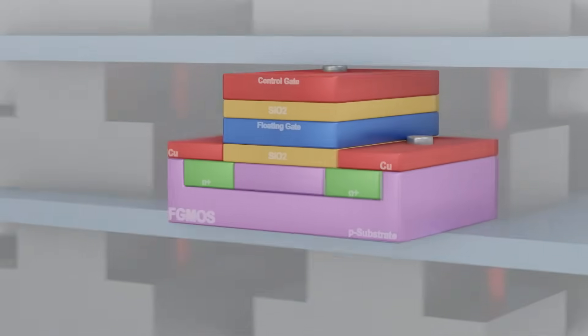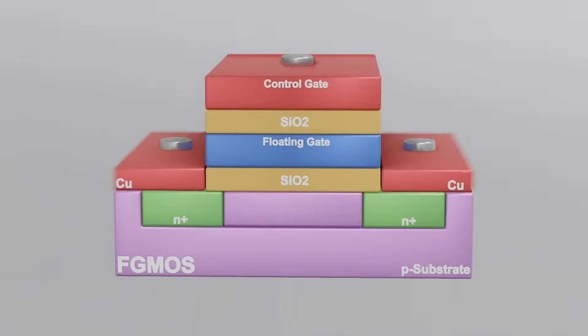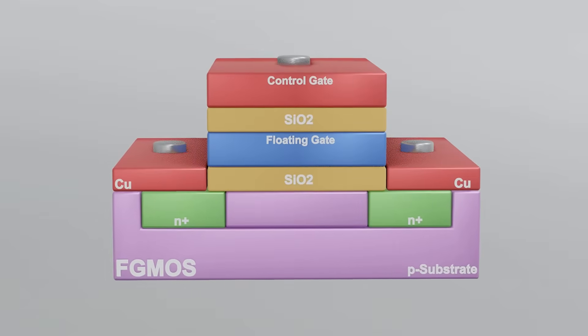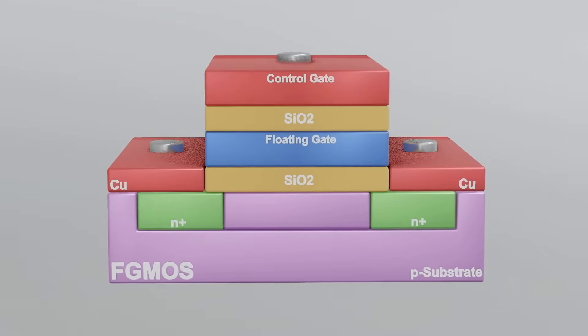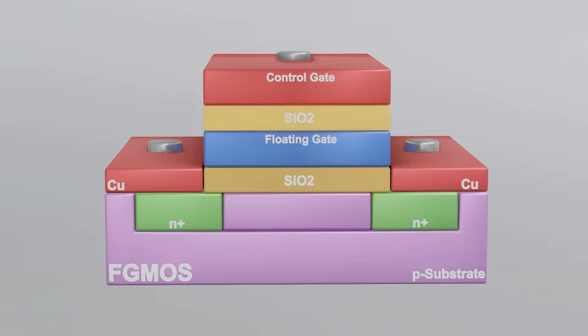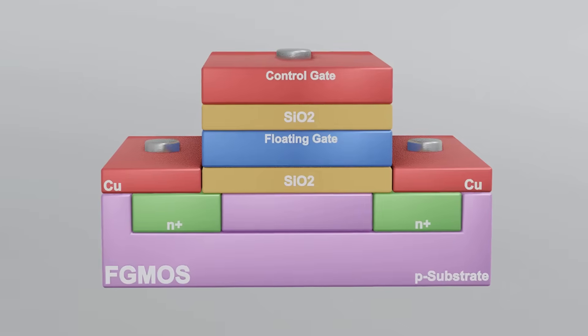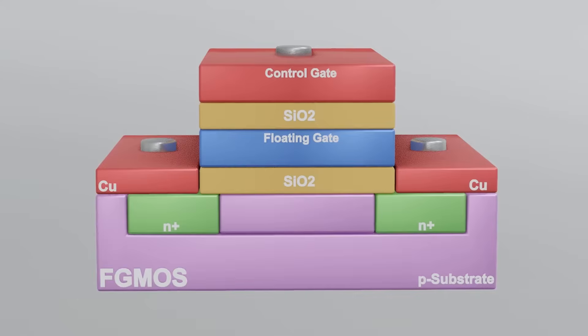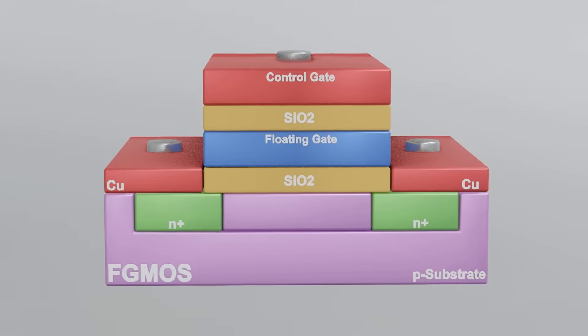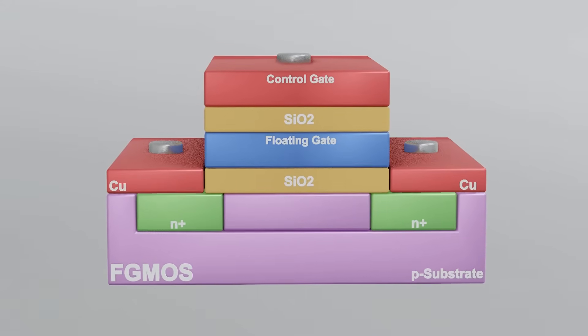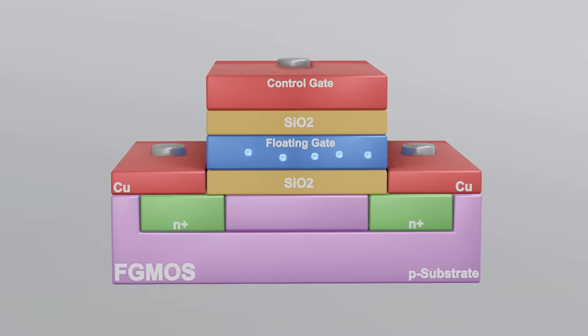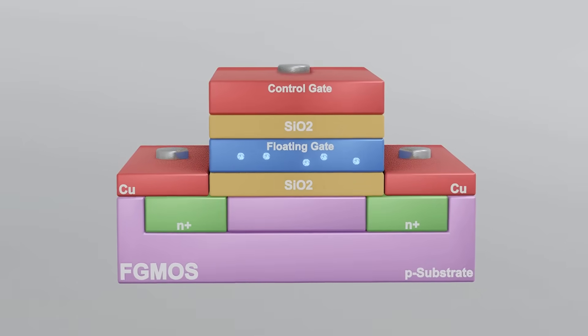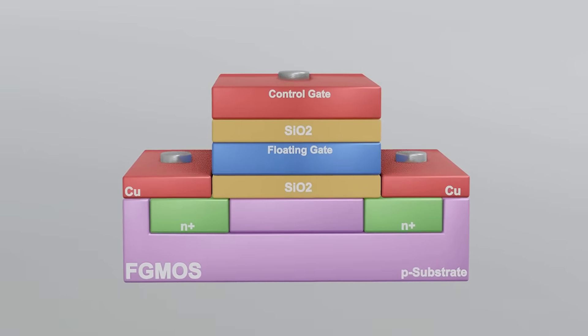The floating gate MOSFET is made of two gates. One is known as a floating gate and the other is a control gate. Both are separated by dielectric material. The control gate is responsible for producing an electric field that attracts or repels the electrons. The floating gate acts as a container. It traps the electron and the flash memory works by adding or removing an electron from the floating gate.